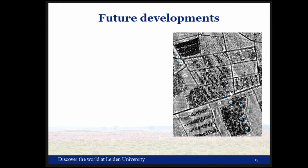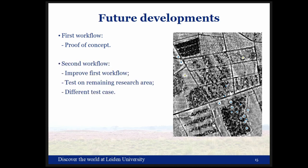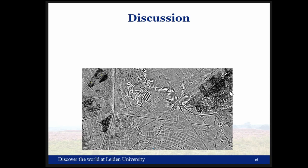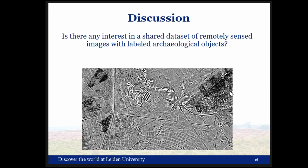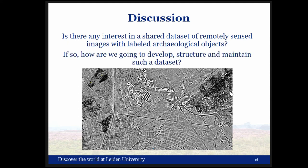In the long run we want to develop at least two more workflows. This first workflow was a proof of concept — can we use Faster RCNN on LiDAR data? The second workflow will improve on the first and be applied to the remainder of the research area, including testing on a different landscape type to assess how generic the model is. The third workflow will use a completely different data type, such as aerial photography or SAR. Finally, I'd like to raise for general discussion: is there interest in a shared dataset of remotely sensed images with labelled archaeological objects, and if so, how should we develop, structure, and maintain it?